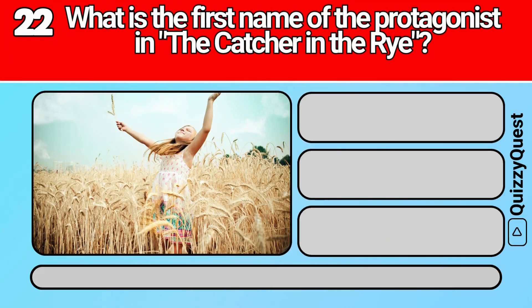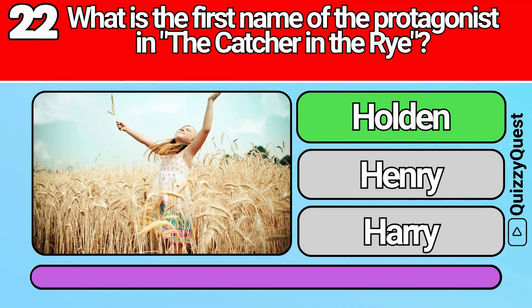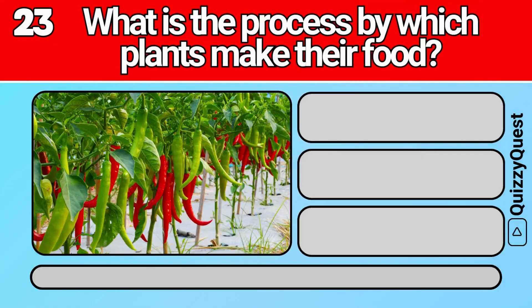What is the first name of the protagonist in The Catcher in the Rye? What is the process by which plants make their food?